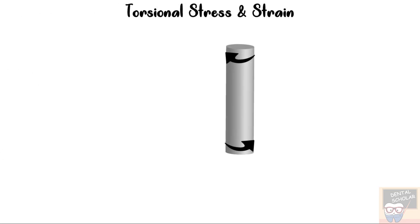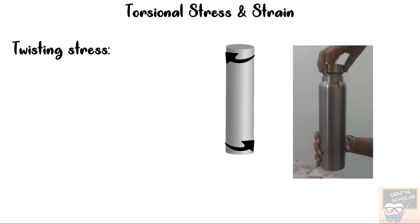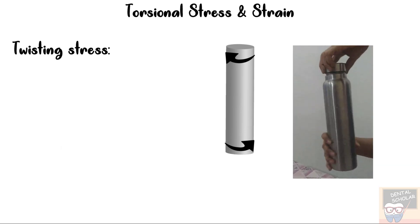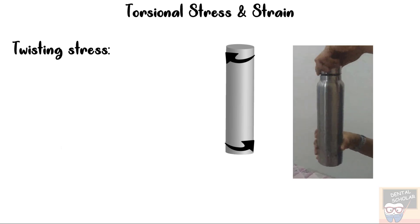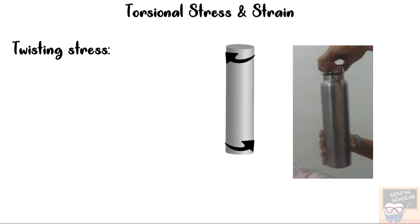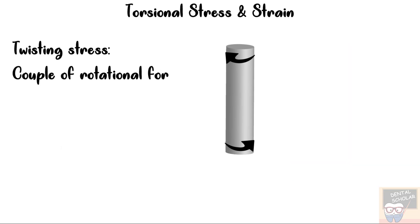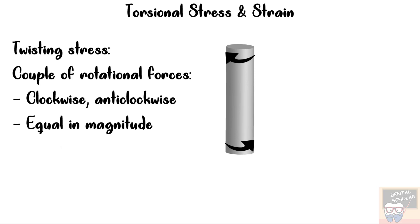Next is torsional stress and strain — the twisting stress. A simple example is opening the cap of a bottle: the top hand applies an anti-clockwise force to the cap while the lower hand provides support by applying a clockwise force. The couple of rotational forces are equal in magnitude, opposite in direction, and act in different planes. In dentistry, torsional forces are applied in orthodontics, such as when twisting a ligature wire.